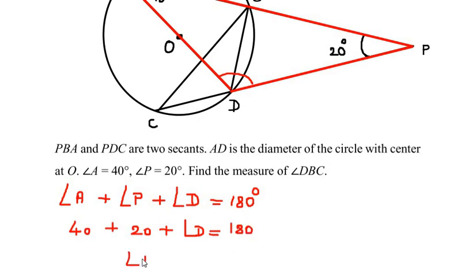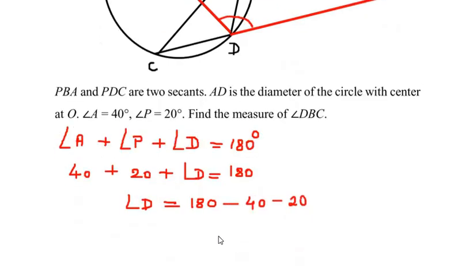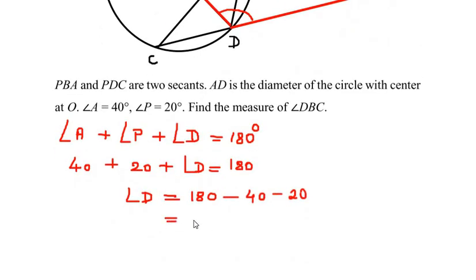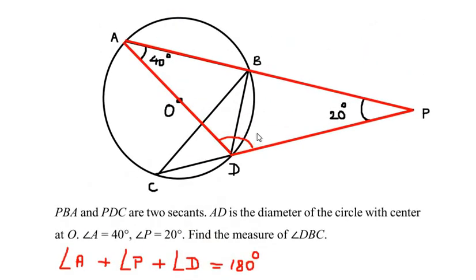So angle D equals 180 degrees minus 40 minus 20, which gives us a value of 120 degrees. Now in the question they have mentioned that PDC is a secant. A secant is a line which enters the circle and touches the circle at two points.